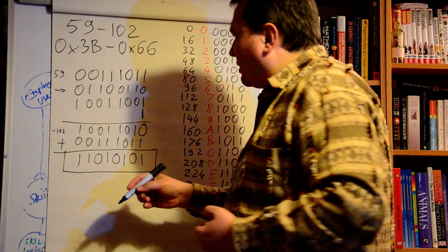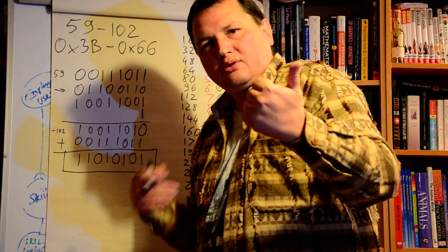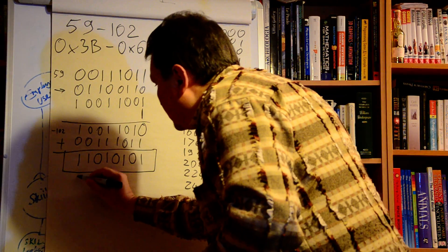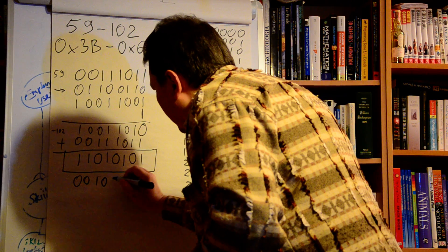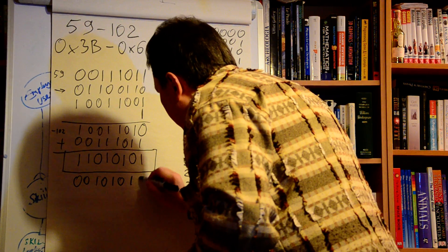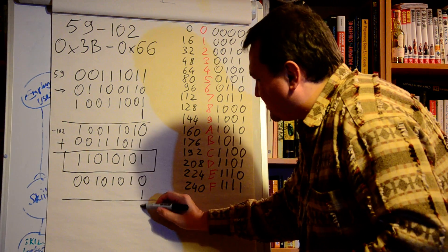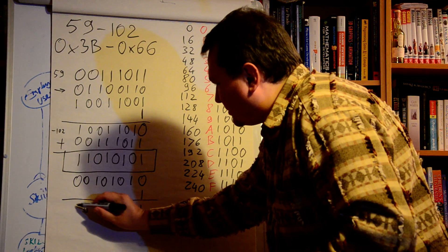So we will do it exactly as we did here, by first flipping all the bits, second adding one. So all bits flipped, it's 00101010 plus 1. It's very easy: 0 plus 1 is 1, giving us 00101011.